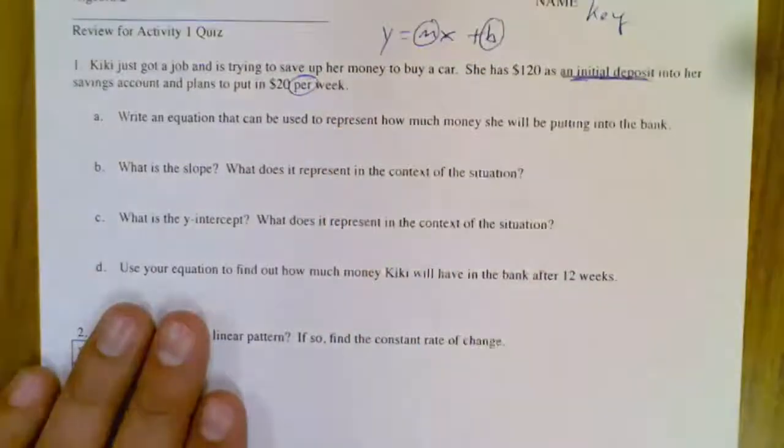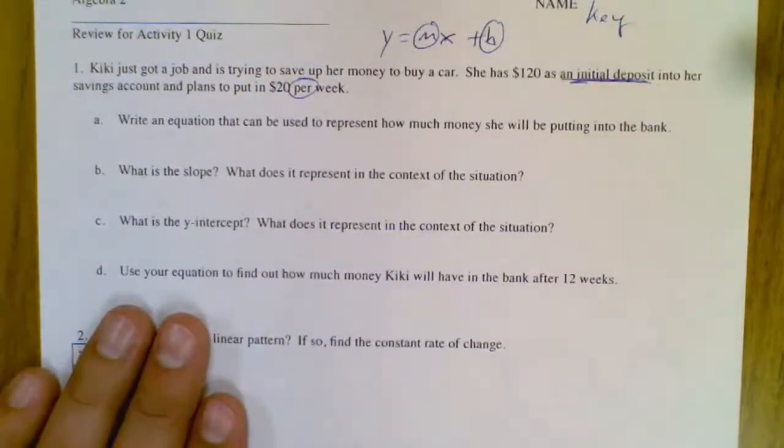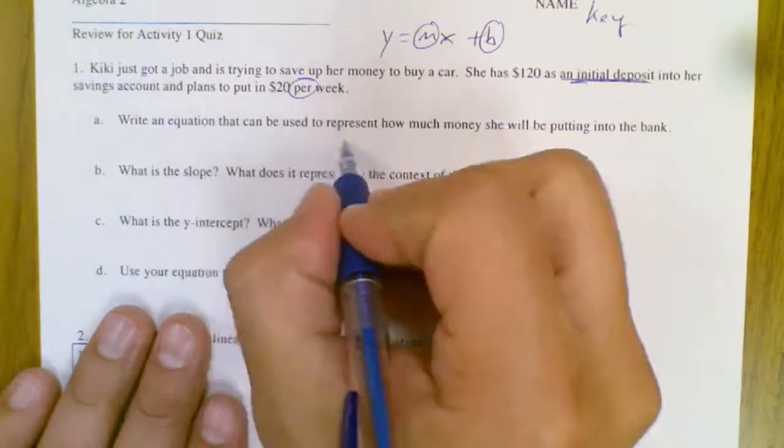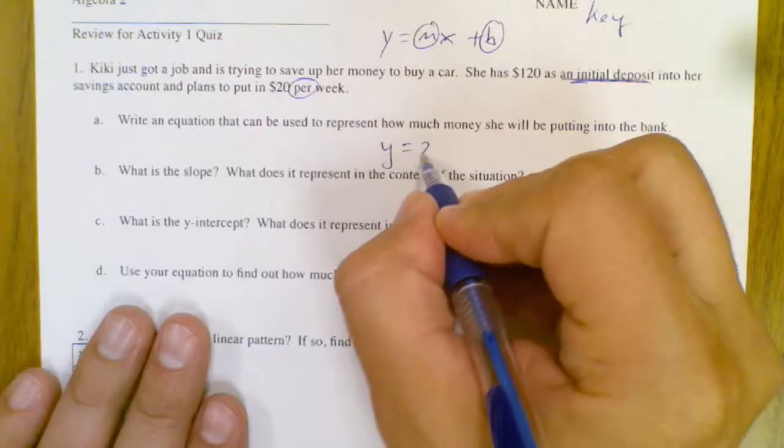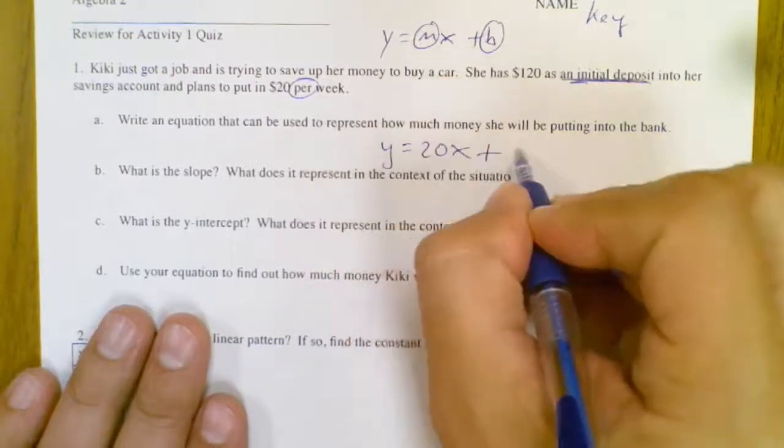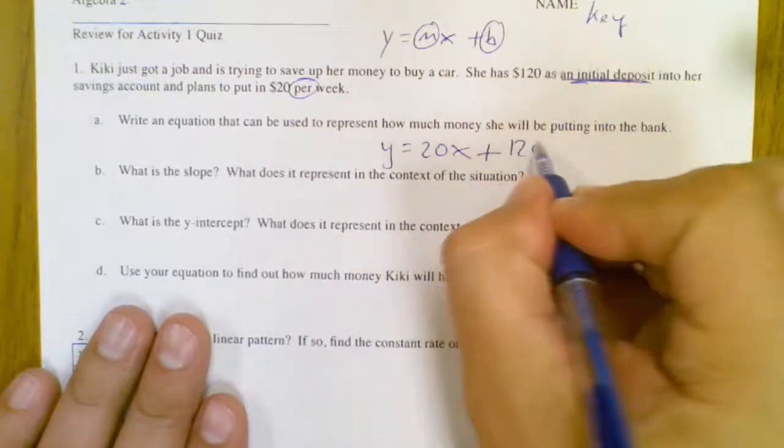a slope and an intercept. When it says write an equation that can be used to represent, instead of y equals mx plus b, I say y equals 20x plus your starting amount of 120.